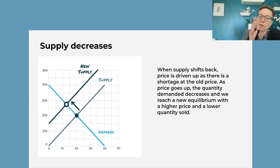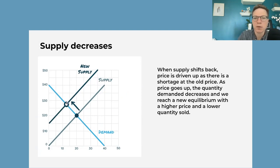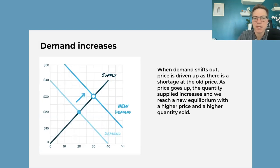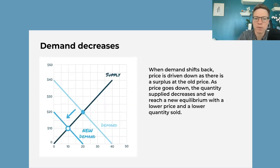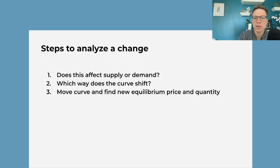Then we cover what happens when supply decreases — we go to a new equilibrium with higher prices and lower quantity. And then the other shifts: if there's a demand increase, the price will go up and the quantity will go up; a demand decrease means price will go down and quantity will go down.